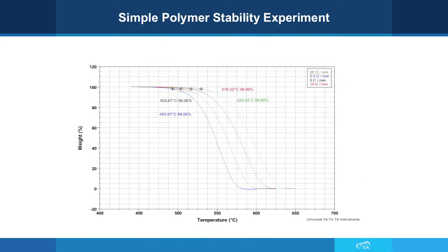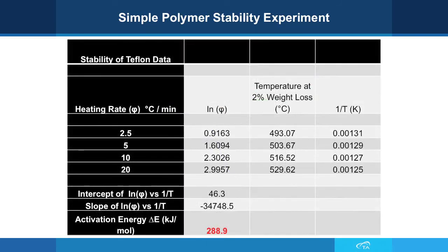This is our data. You can see that we ran this at four different heating rates — 2.5, 5, 10, and 20 — and we obtained the temperature at which 2% of the weight loss occurs and converted that to Kelvin and plotted it. Here's a summary of our data and our heating rates. We obtain the natural log of the heating rate and the temperature at which 2% weight loss occurs, converted to Kelvin. We plot the natural log of the heating rate versus the reciprocal temperature, and we end up with an intercept of 46.3, which is A, our pre-exponential. The slope of the line is minus 34,748.5, which we then multiply by our gas constant, and we end up with an activation energy of 288.9 kilojoules per mole.